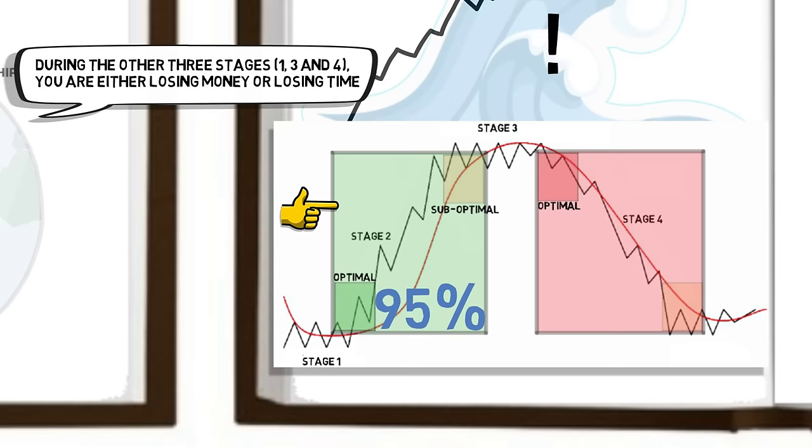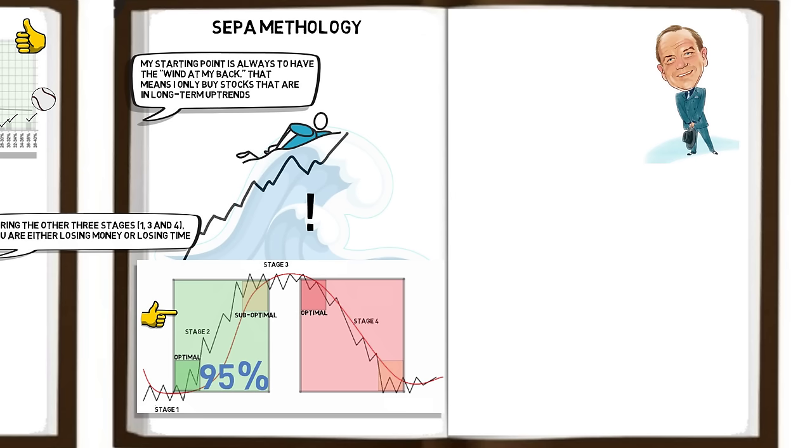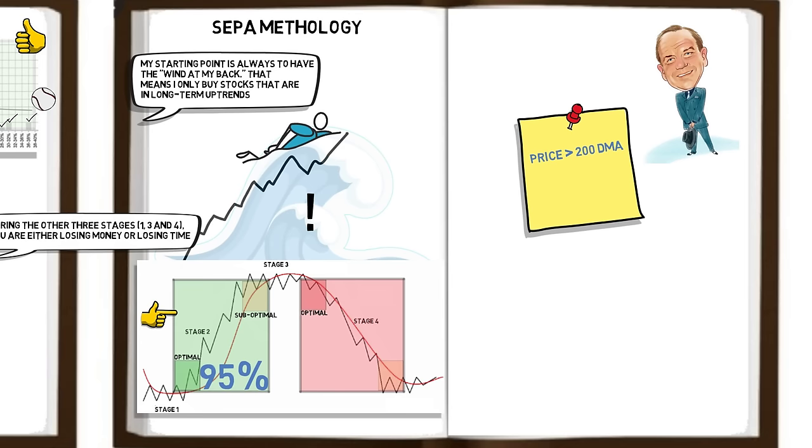Trading great Paul Tudor Jones reinforces this foundational criterion, and when asked for his most important rule in trading, he said that the price must be above the 200-day moving average, and the moving average needed to be in an uptrend. Paul Jones went on to say, the whole trick to investing is, how do I keep from losing everything? If you use the 200-day moving average rule, then you get out. You play defense and you get out.